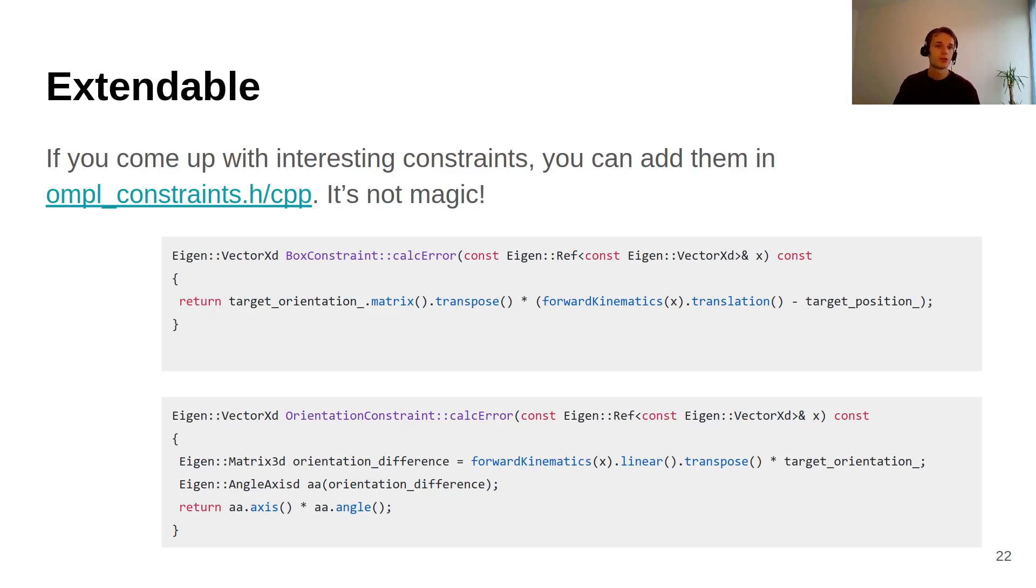Also important, if you add constraints yourself, you should really think about adding the Jacobian of the constraints, the derivative, to make an analytical derivative to make the planner work fast.